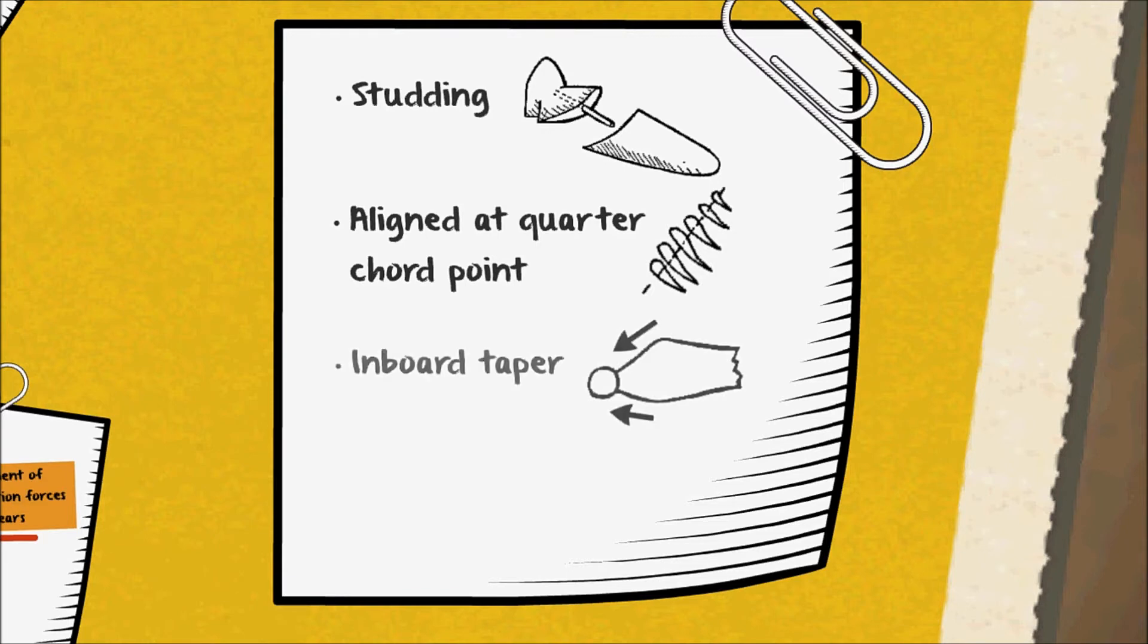Inboard taper. The inboard area of the blade is tapered into the hub as the aerodynamic effects of this area would be negligible. Lastly, rounding of blade tips. The edges of the blades are rounded in order to reduce drag at the tips. This is based on the principle that elliptical wings have the highest efficiency compared to other designs.